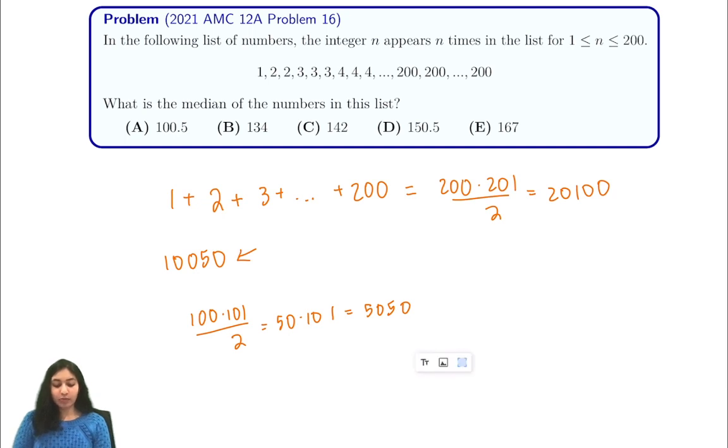So we can jump up by some, or you can also write an equation that tells us that 10,050 is some x times x plus 1 over 2. Or we have that 20,100 is equal to x squared plus x for some number.